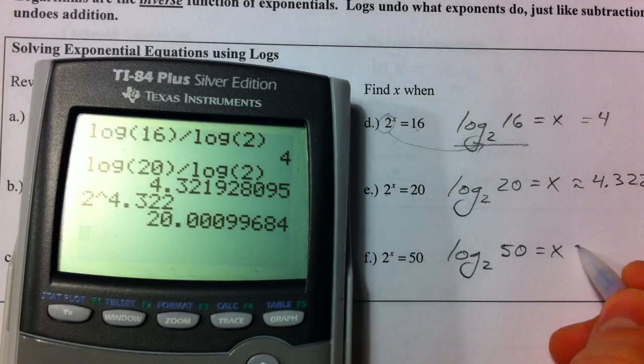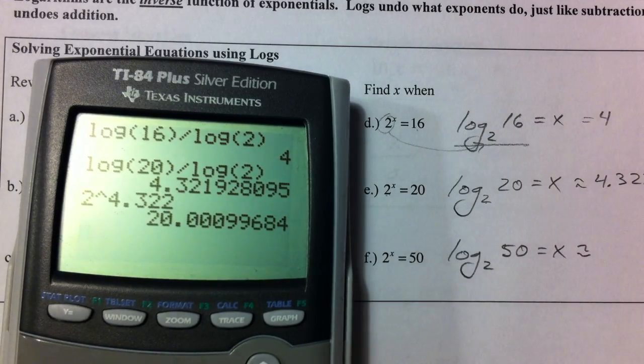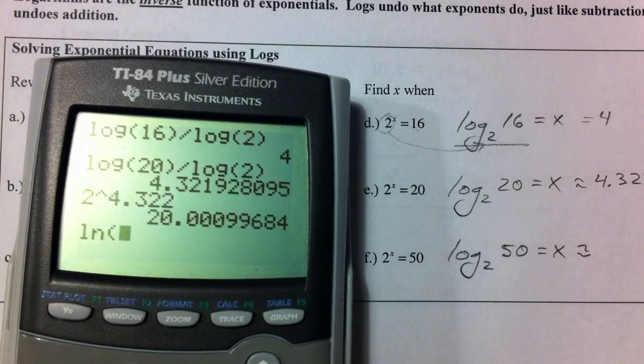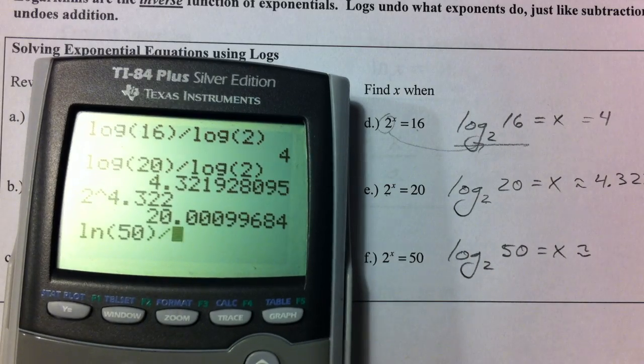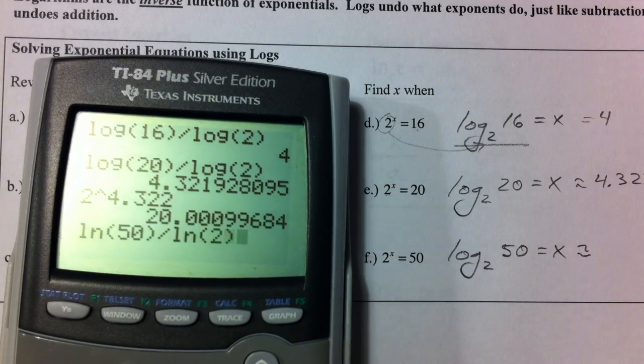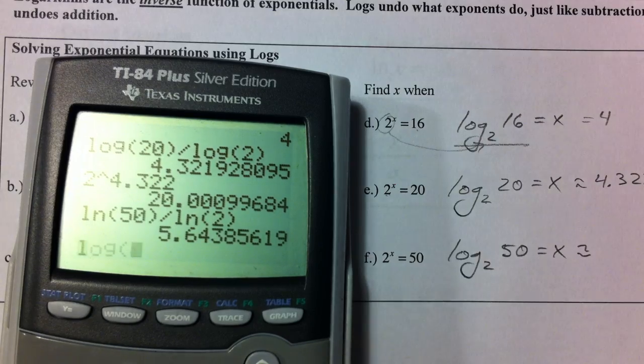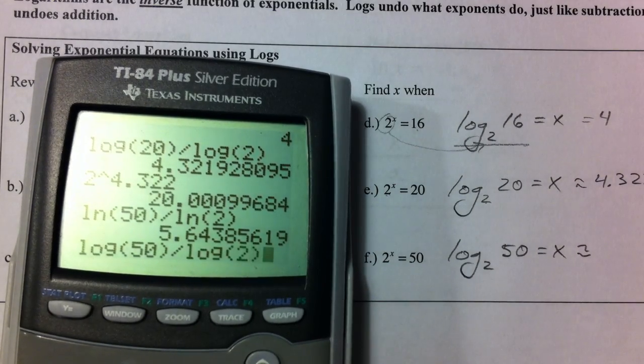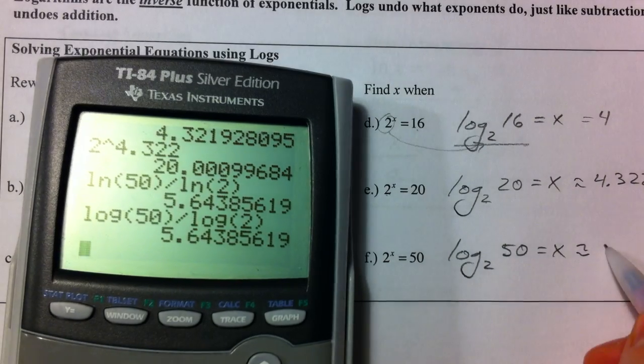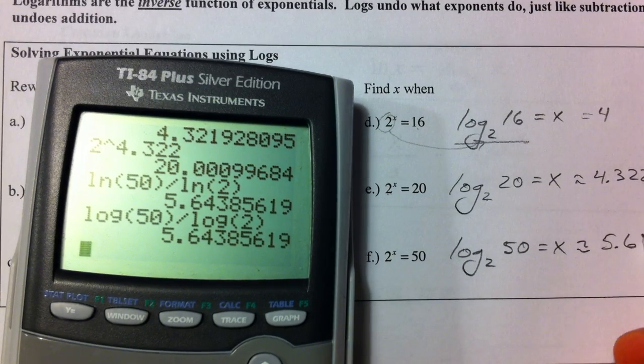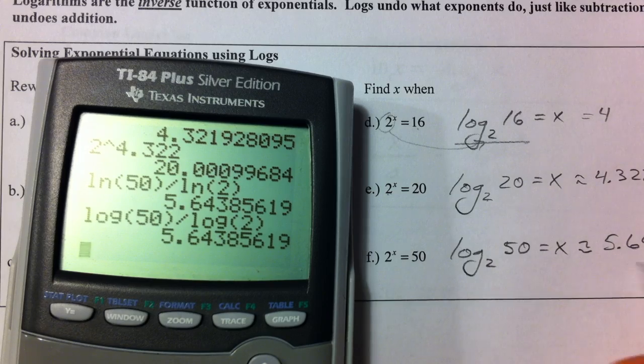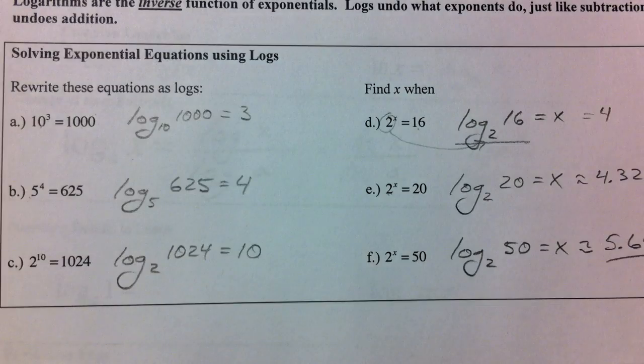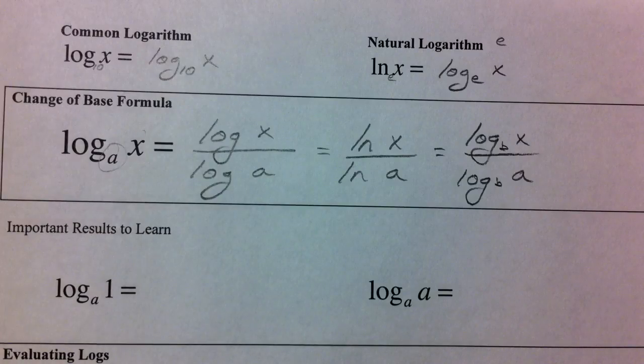And then finally, log base 2 of 50. Let's do the natural log this time. Natural log of 50 divided by the natural log of 2. And just to show you that we get the exact same thing no matter which way we do it. 5.644. All right, we'll come back and talk more logarithms.